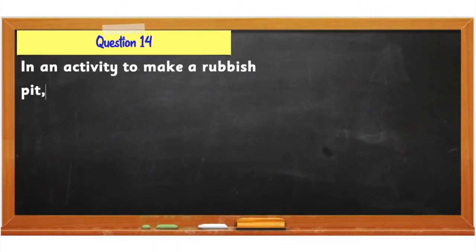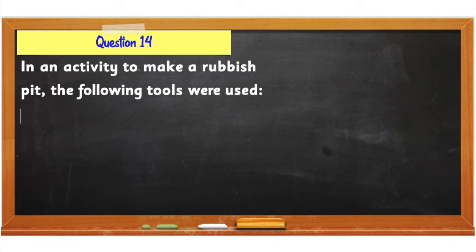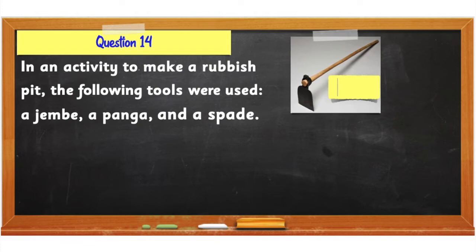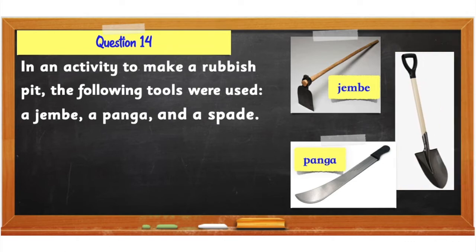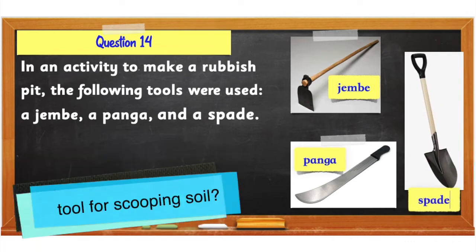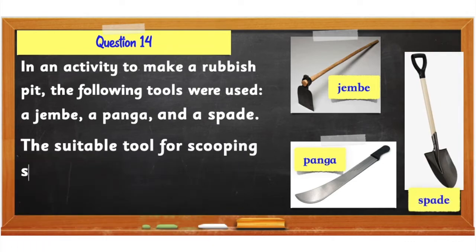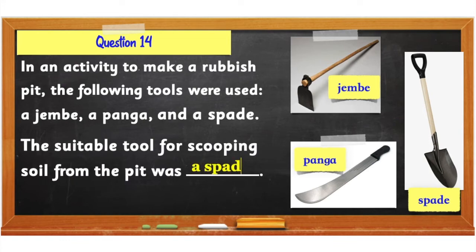Question number 14: In an activity to dig a rubbish pit, the following tools were used: a jembe, a panga, and a spade. Which tool is suitable for scooping soil? The suitable tool for scooping soil from the pit was a spade.